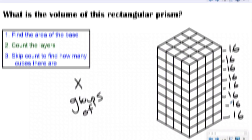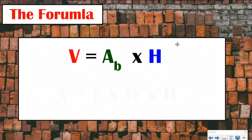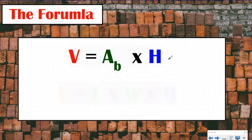This is where our formula came from, and this is what the formula is: volume equals the area of the base times the height. When you look at this, it's the exact same thing we were just doing. We had to find the area of the base — how many cubes were in each layer — and then multiply that by the height. The height was our layers.